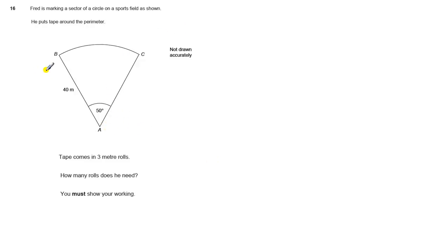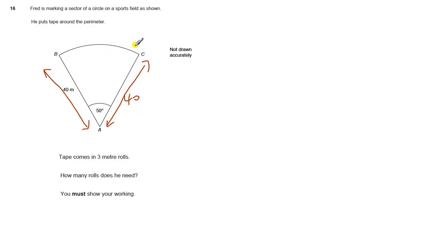We know this side is 40, and because it's a circle this side is also 40 — both are the radius. And this is the tricky bit we've got to work out: this arc length here.